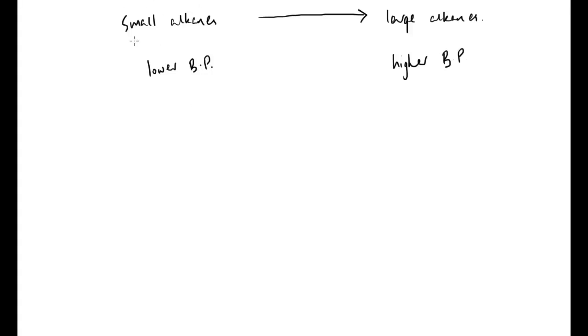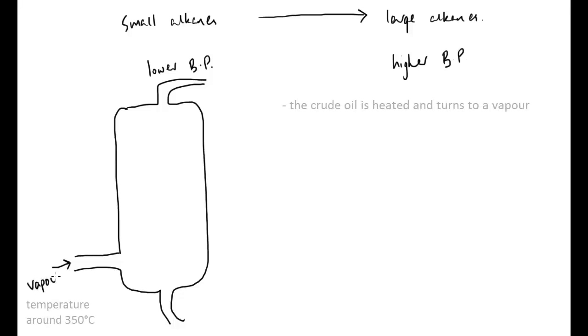So, if our crude oil contains a range going right from small right up to large with varying boiling points, we can separate them. The way we can do that is we can vaporise our crude oil and if we put up a large tower, something that looks a bit like this, if we put the crude oil in as a vapor, so we heat it up very high, put it in here and it will rise up the tower.